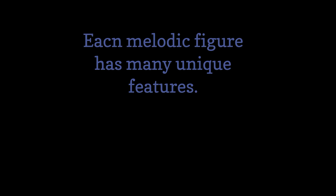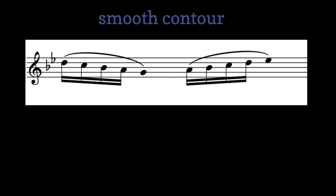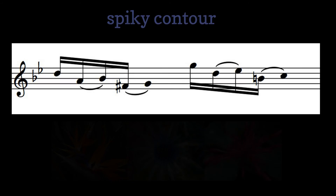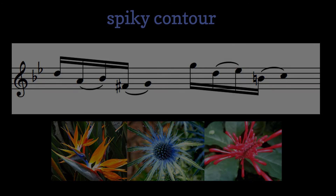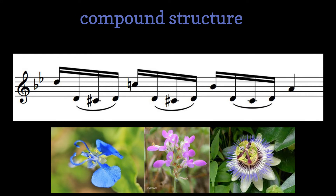Each figure has many unique features; I'll talk about just three in this video. The first is shape, and just for fun I'll use flowers as a comparison. Some figures have a smooth or linear contour, just like some flowers have a very smooth or simple shape. Some melodic figures have a jagged or spiky shape, as do some flowers. And some melodic figures seem to split into a high part and a low part, similar to how some flowers have compound structures.